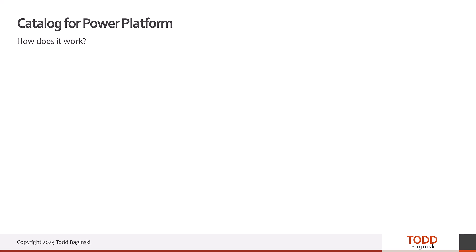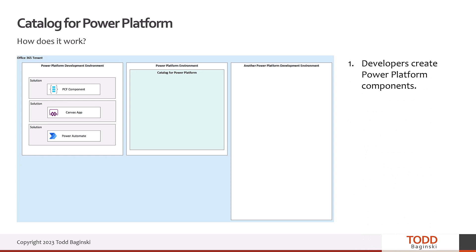Let me walk through what the flow inside of the catalog looks like. I've drawn pictures to illustrate it. The big blue box represents the Office 365 tenant. Inside that tenant, I have several Power Platform environments — a Power Platform development environment, another environment where the aquamarine-colored Catalog for Power Platform is installed, and yet another Power Platform development environment. I'll paint the picture of how things go into the catalog, how they come out, and how they're used to create solutions.